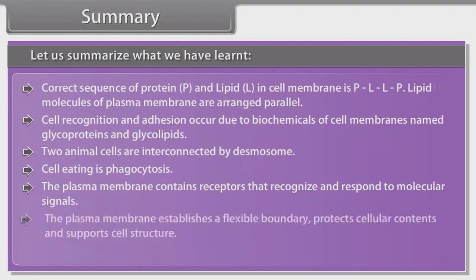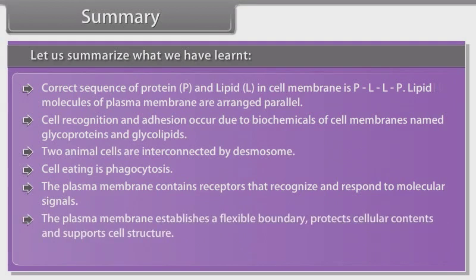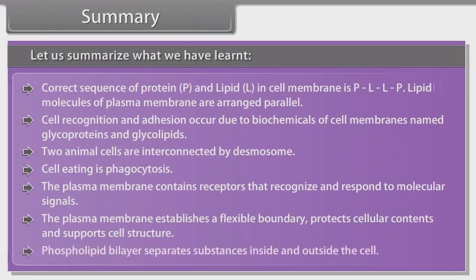The plasma membrane establishes a flexible boundary, protects cellular contents and supports cell structure. The phospholipid bilayer separates substances inside and outside the cell.